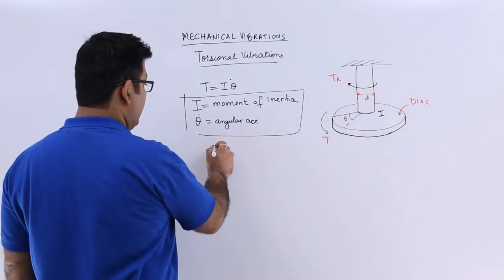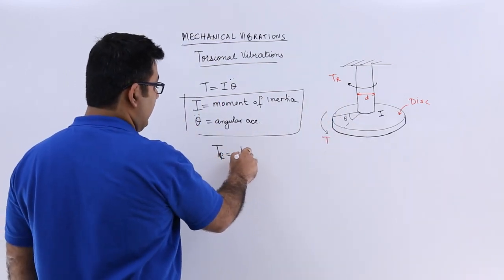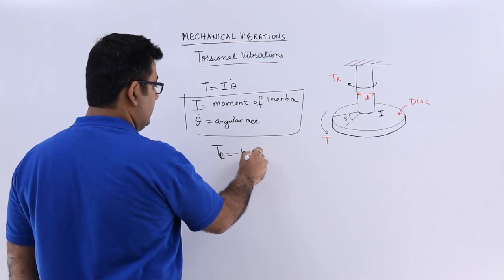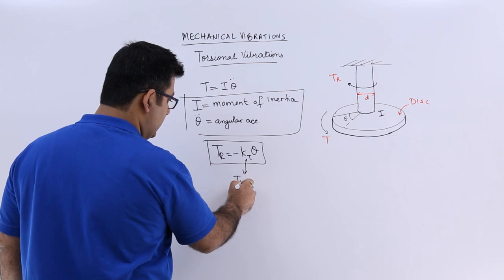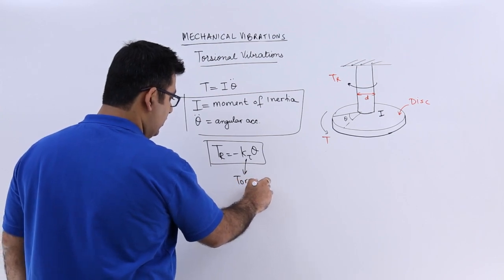So you will get TR equals minus KT into theta. So KT is the torsional stiffness.